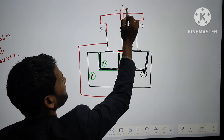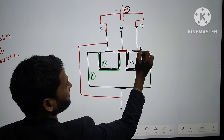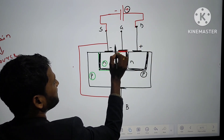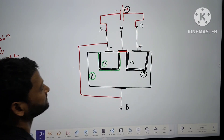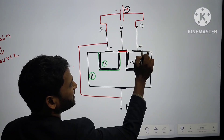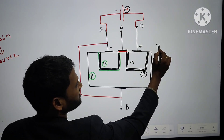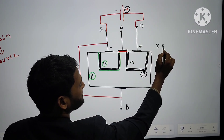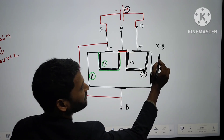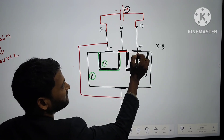We already have depletion layers present. Now, if we provide positive supply to drain — plus connected to N at the drain side — this junction becomes reverse biased, so the width of that depletion layer will increase.